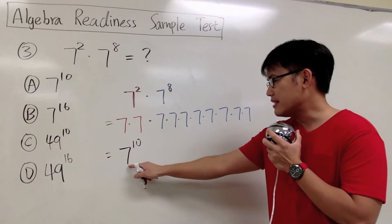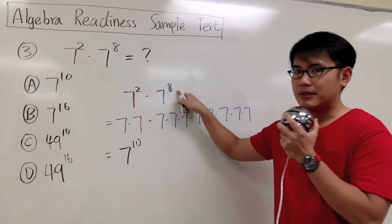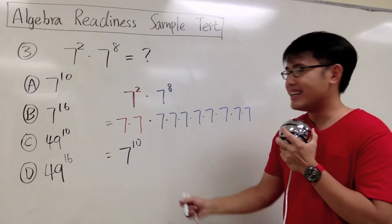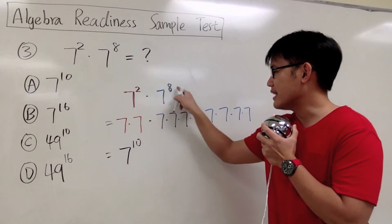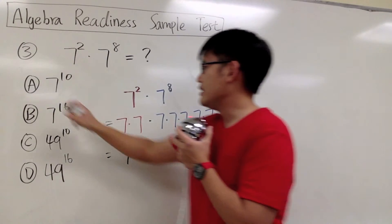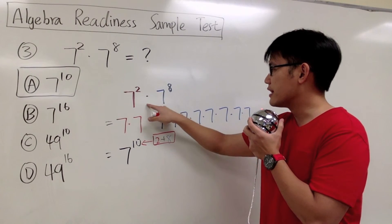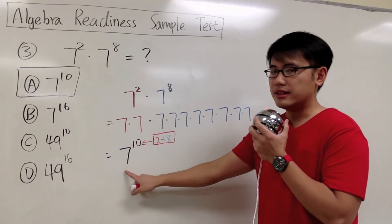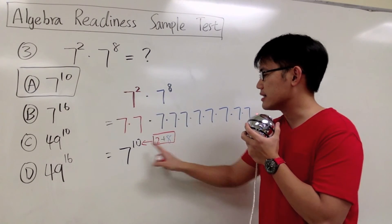The base stays the same, and then we can just add 2 and 8 — that's how we count the quick way. How many 7s do we have all together? 2 plus 8. That's how we get the 10th the quick way. The answer is 7 to the 10th power. For 7 to the 2nd power times 7 to the 8th power, the 7 stays the same but we add the exponents: 2 plus 8, that's how we get the 10th.